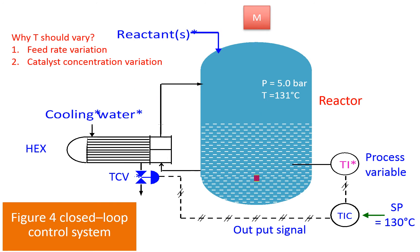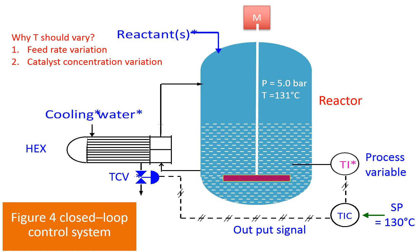Let us now look at an example of closed loop control. Shown in this figure is a batch reactor where an exothermic reaction is taking place. The reactor temperature is an important operating parameter, set at 130 degrees centigrade. The temperature indicator controller receives a measurement signal from the temperature indicator, compares it with the set point, and produces an error signal. Depending on the magnitude of the error signal, an output signal is generated by the controller and sent to the final control element TCV, which regulates the cooling water to the heat exchanger. This control action causes the temperature of the reactor to move closer to the set point. The response of the TCV is reflected in the reactor temperature, which is the measured variable, and the control action is based on the output signal from the temperature indicator.